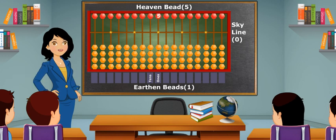whereas one heaven bead equals 5. To show 1 on 1's place, we will bring 1 bead upwards. It shows 1.